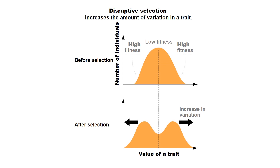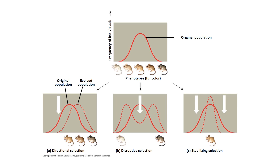There's also disruptive selection, which increases the amount of variation of a trait — in this case you're selecting for the extremes. A great example occurs in these beach mice. Mice living behind the sand dunes in the woods need to be brown, but if they're on the beach, they need to be white. If you're in between brown and white, you stand out on the beach or in the forest. So this type of selection goes for the extremes, maintaining a population of basically white mice on the beach and brown mice in the woods.